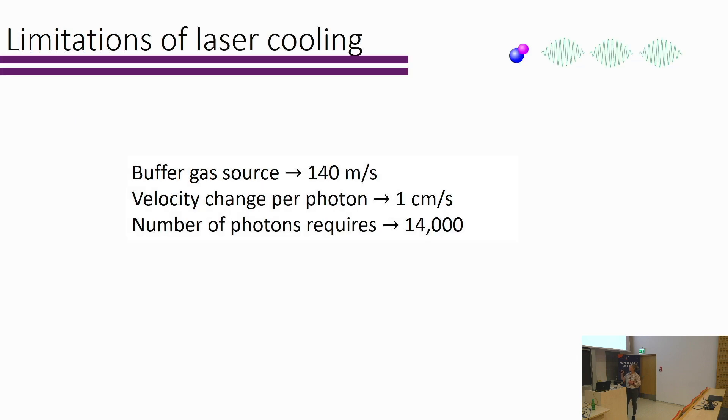Laser cooling has, as we've heard over the course of this week, advanced hugely over the last few years, and we've seen great success. For people who aren't familiar with the numbers, if you take your buffer gas source of molecules, this tends to have a forward velocity in the region of 140 meters per second. The velocity change per photon is on the order of a centimeter per second. So that means we have to scatter 10 to 20,000 photons to decelerate in order to capture in a MOT. This leads to some problems which have been highlighted by the previous two speakers.